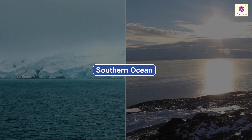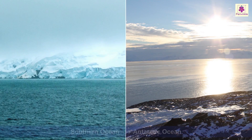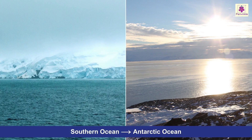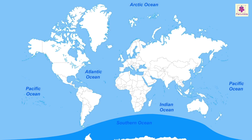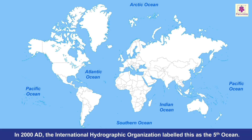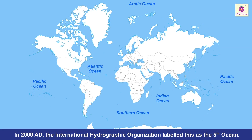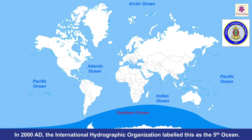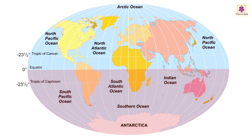The Southern Ocean is also known as the Antarctic Ocean. It encircles the continent of Antarctica. The International Hydrographic Organization labeled this as the fifth ocean, which includes the southern portions of the Pacific Ocean, the Atlantic Ocean, and the Indian Ocean. It lies in the Southern Hemisphere.